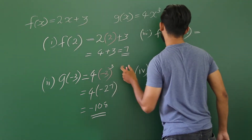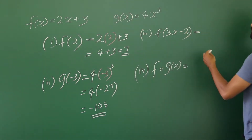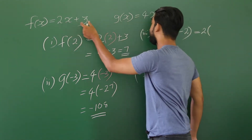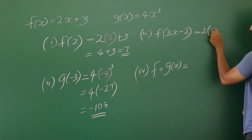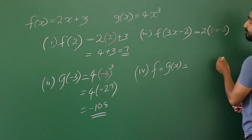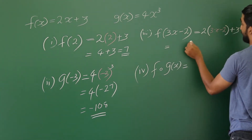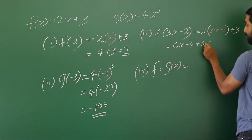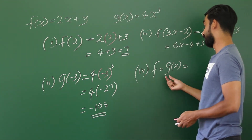Roman number 3: f(3x minus 2). The f function — x should be replaced by (3x minus 2). So we write 2 times (3x minus 2) plus 3. If you simplify, it is 6x minus 4 plus 3, and we end up having 6x minus 1.